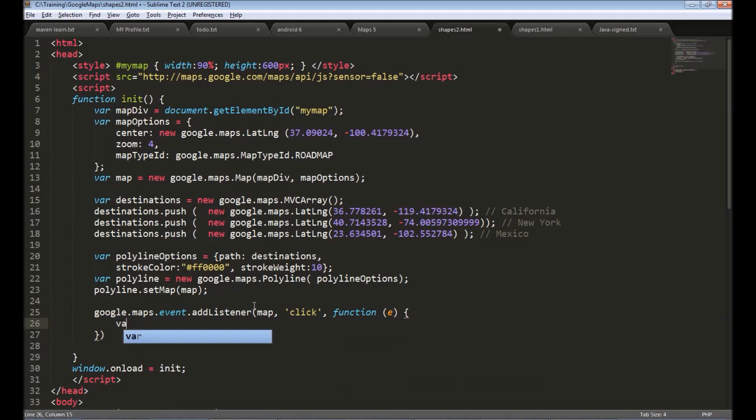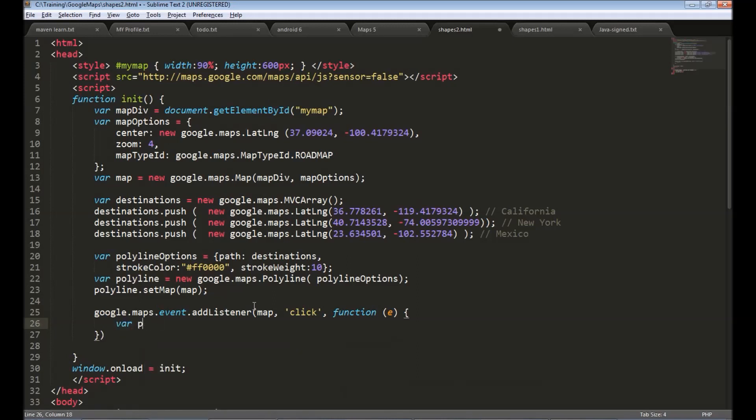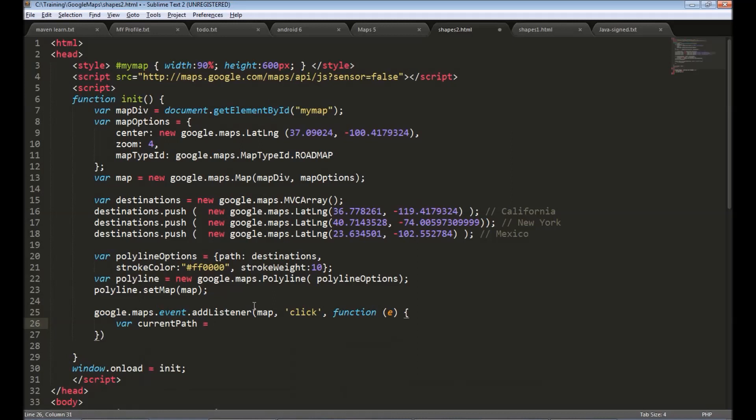To get the current polyline we can say this returns the array. Let's say current path equals to polyline dot get path. So whenever user clicks the E object will contain the coordinate where user clicked. So to the current path array we will push the E dot lat long. This lat long is an object representing a coordinate where user clicked. So what we have done is we converted our normal array into MVC array and when user clicks on any location in the map we get the current polylines path and add a new entry to that array.